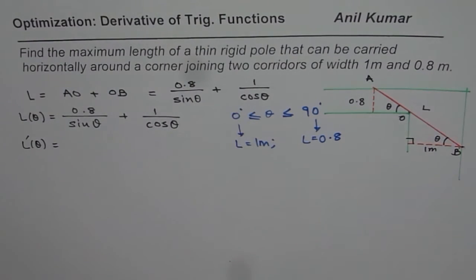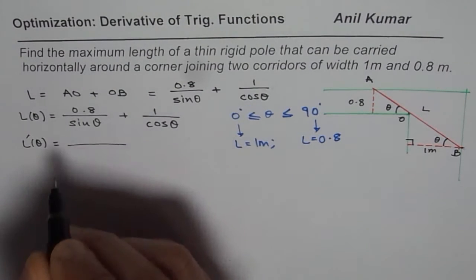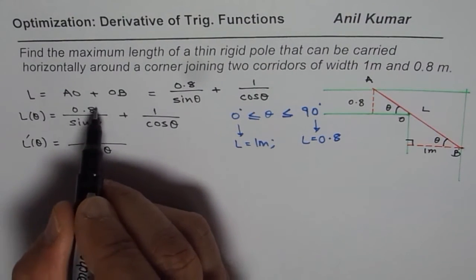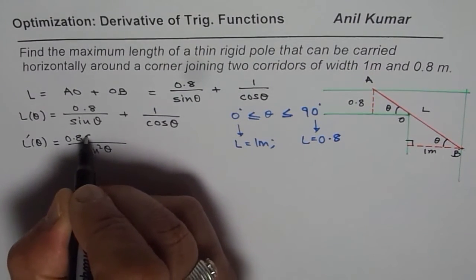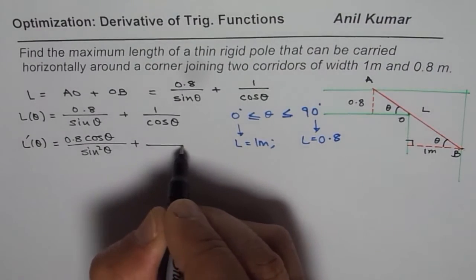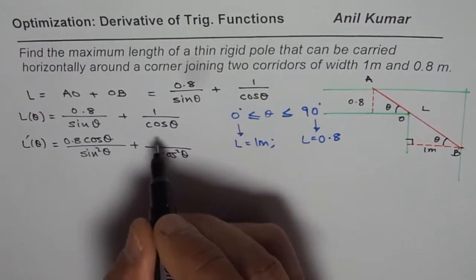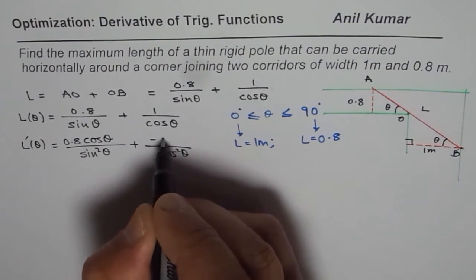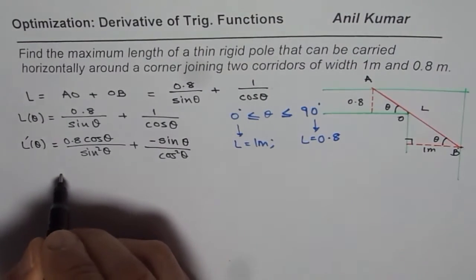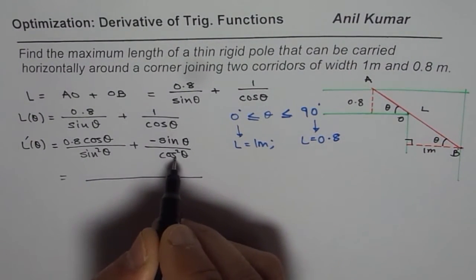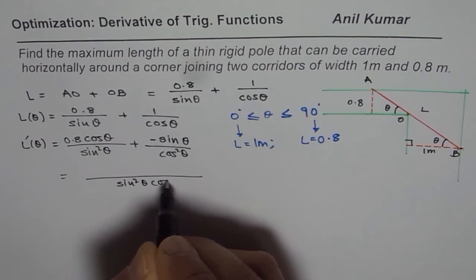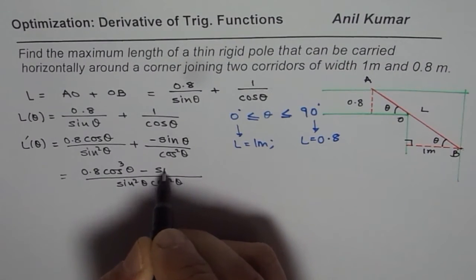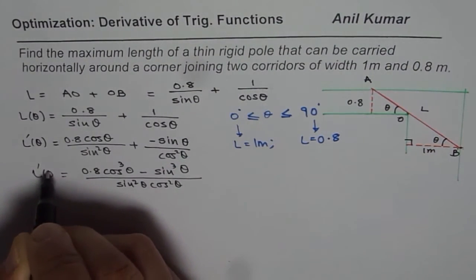Let us find the derivative of this function. We apply the quotient rule. In the denominator we get sin²θ. Derivative of 0.8 is 0, so we get 0 minus 0.8 times derivative of sin θ, which is 0.8 cos θ. Plus derivative of 1/cos θ — applying quotient rule with cos²θ in the denominator: derivative of 1 is 0, so minus 1 times (−sin θ). Taking the common denominator sin²θ · cos²θ and cross-multiplying, we get 0.8 cos³θ − sin³θ as the numerator.